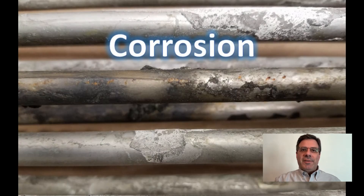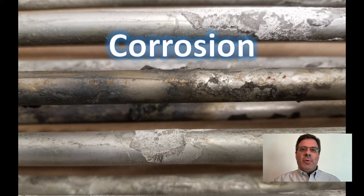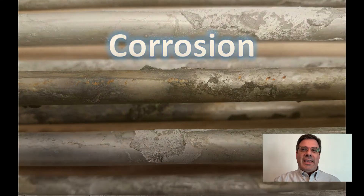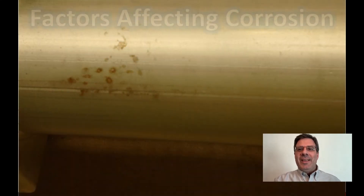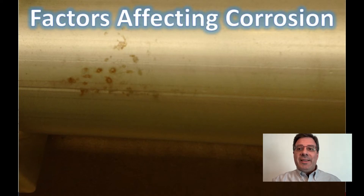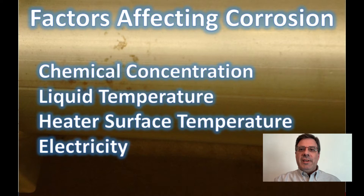The first most common cause of failure is corrosion. This means that either the process chemical in the tank or some drag-in chemical from a previous tank is reacting with the heater surface. The rate of corrosion is affected by many factors, including the concentration of the chemicals, the operating temperature of the bath, the surface temperature of the heaters, and the presence of any stray electrical currents.